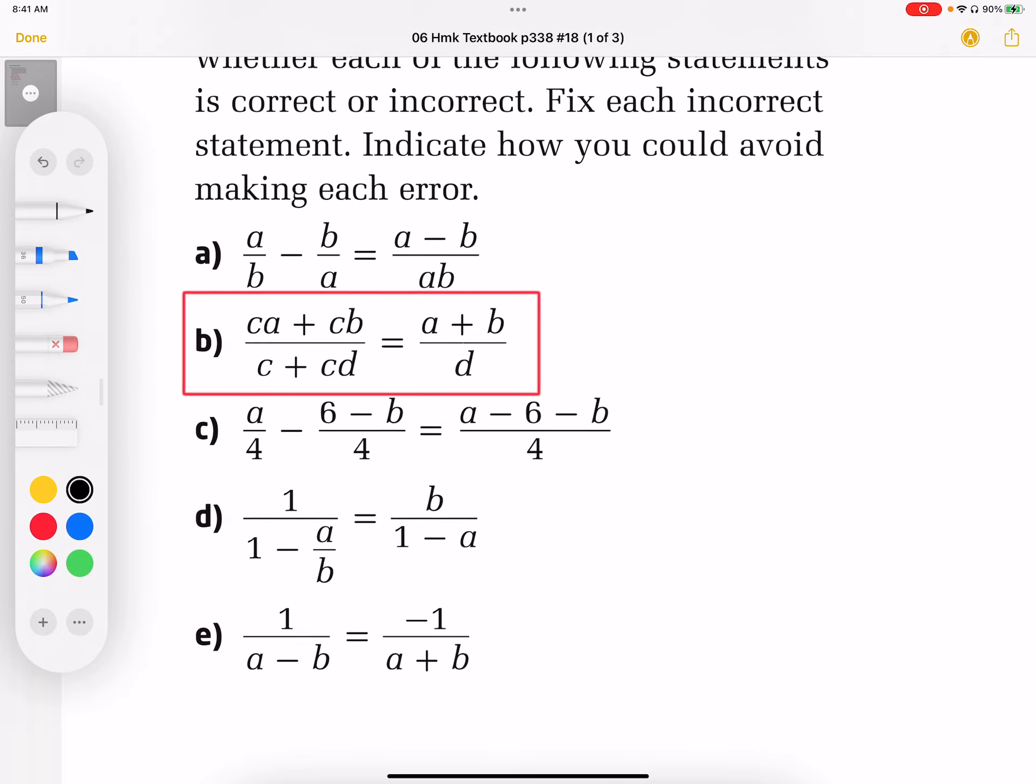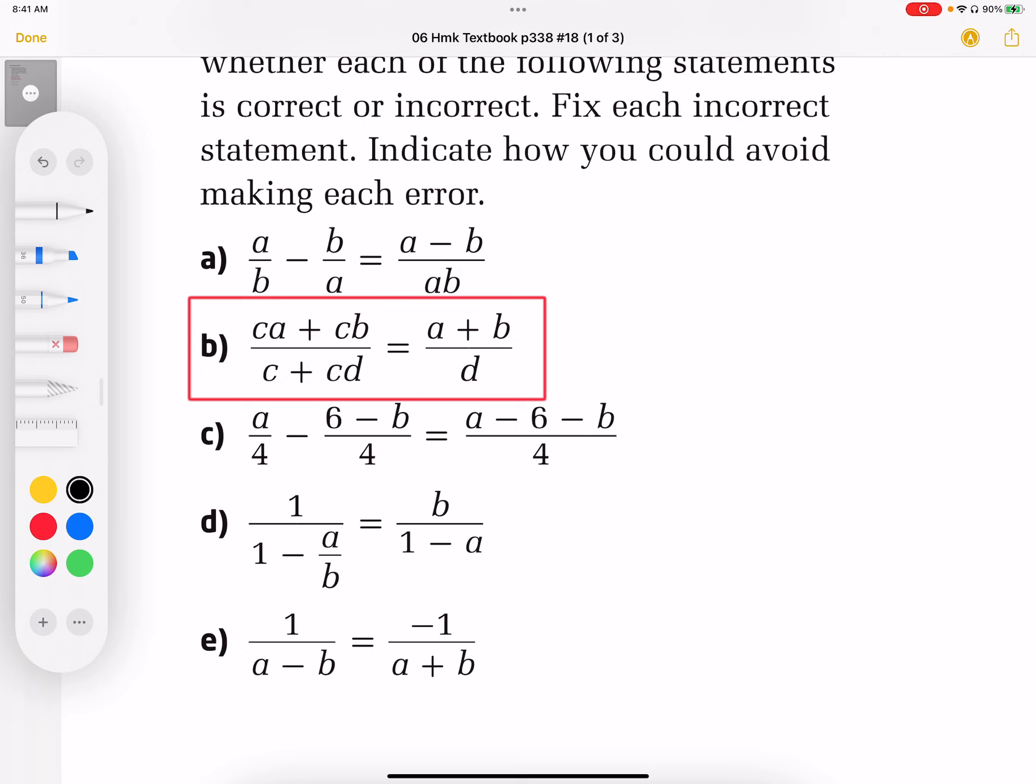18b. Here the common mistake that we see is that when we simplify this, most students will recognize there's a common factor of c and they will cancel out the c's like this and then leave a zero for the c here. So the c disappears here and there's nothing left behind.